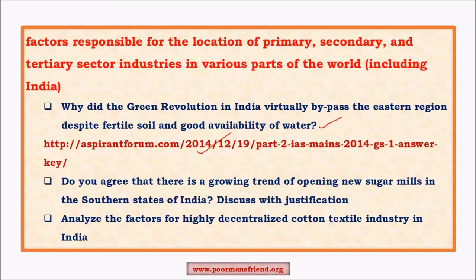For 'Analyze the factors for the highly decentralized cotton textile industry in India,' you need to know cotton cropping patterns — especially the Vidarbha region of Maharashtra and the Saurashtra region of Gujarat as major cotton-growing areas. 'Decentralized' means less central government control — most states are involved in developing their own cotton textile industry. You need to understand what government policies improved cotton production in various regions, adopting a multidimensional approach.